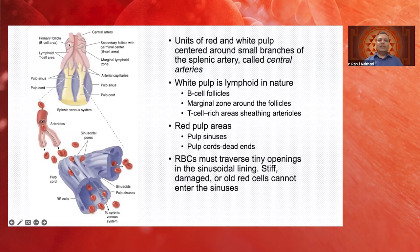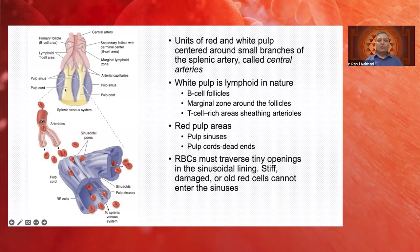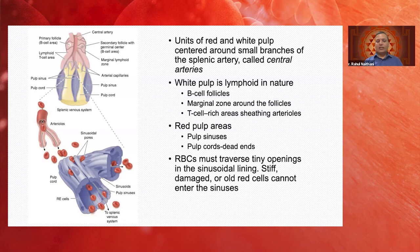The spleen is broadly divided into two components: the white pulp and the red pulp. Along the central artery there is a primary follicular area, then a secondary follicular area, surrounded by a marginal zone. There is also a T-cell-rich zone which sheaths the arterioles. The red pulp contains pulp sinuses and pulp cords. Pulp cords are dead ends — once blood goes there, cells cannot come out unless they squeeze through small sinuses. Only fully functional, fresh RBCs can traverse these sinuses back into circulation; deformed, old, or damaged cells cannot. This is the basis of the spleen's culling and pitting effects.